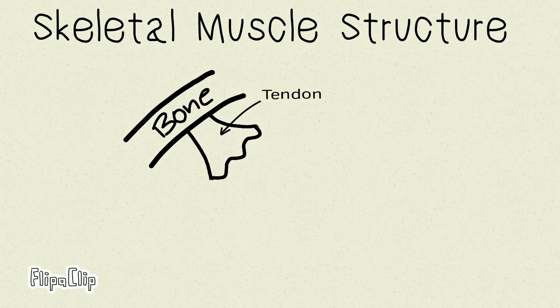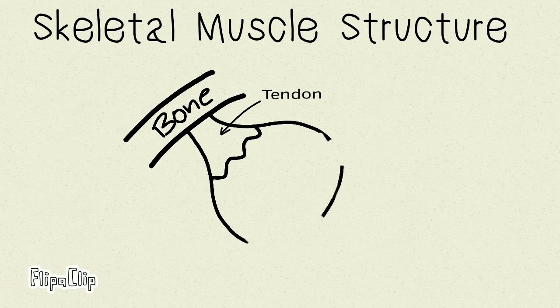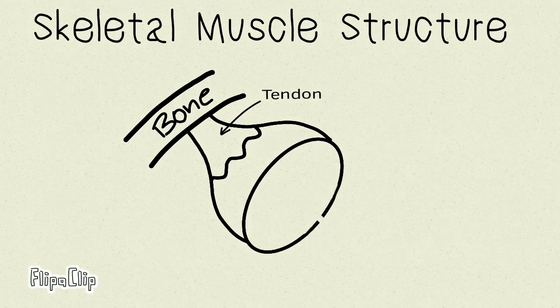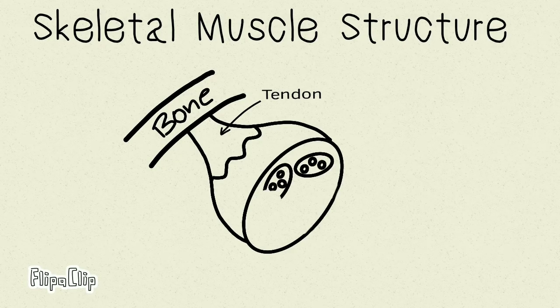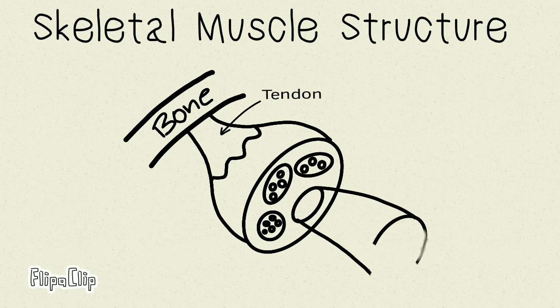Here we are considering a muscle that is attached to a bone by a tendon. There are three connective tissue layers that line a muscle. The outermost is the epimysium. This encircles the entire muscle. Once we move into the epimysium, there are several bundles that are present. These bundles are known as fascicles.